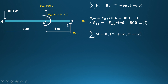Taking moment about point C: clockwise moments are positive and anti-clockwise moments are negative. The 800 N point load produces an anti-clockwise moment about C, with perpendicular distance between A and C equal to 6 plus 4, that is 10.